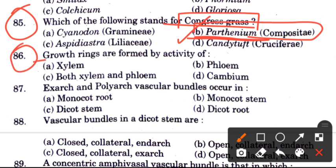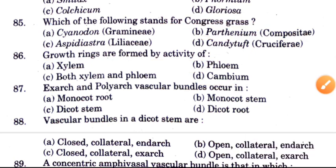Question 86: Growth rings are formed by the activity of — options are xylem, phloem, and cambium. The answer is D, cambium — growth rings are formed by the activity of cambium.